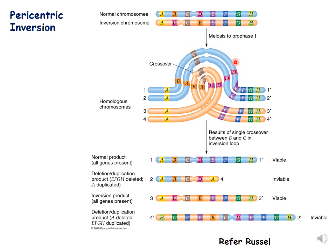When the two chromosomes form a bivalent, to enable bivalent formation both chromosomes undergo loop formation. When they undergo loop formation, all the genes align parallel to each other — A is parallel to A, B is parallel to B, C is parallel to C, and so on.